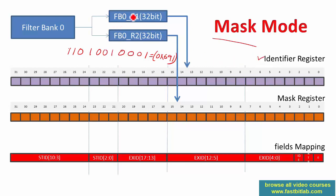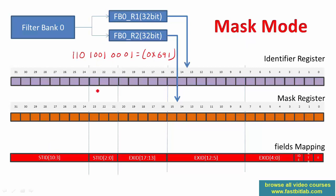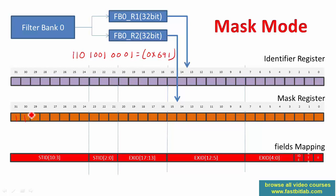In mask mode, R1 is treated as the identifier register and R2 is treated as the mask register. You can see the field mappings in the registers. Our requirement is to allow only identifiers whose first three MSBs are one. The mask register is used to mask out corresponding bits in the ID register. If any bit in the mask register is one, the corresponding bit of the ID register will be checked against the received message — they must be exactly the same for the frame to be accepted.